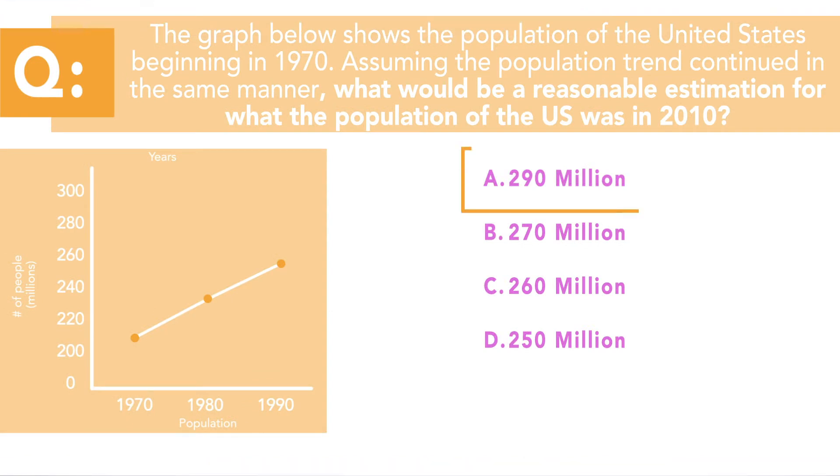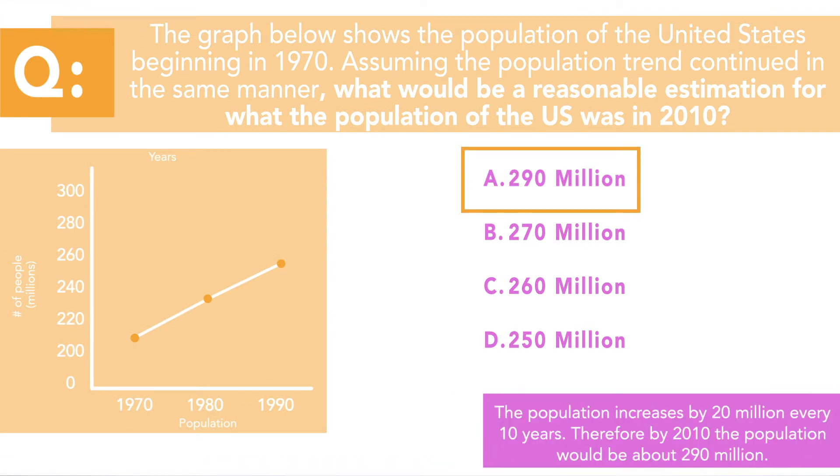The correct answer is going to be 290 million, the population increases about 20 million people per year every 10 years. So if you look on the graph, the estimated population in 2010 would be 290 million. Alright, let's look at the fourth question today.